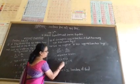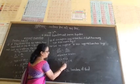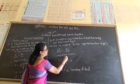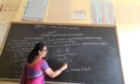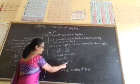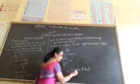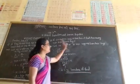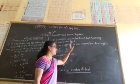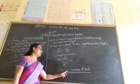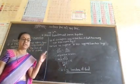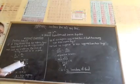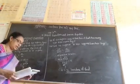Solving this, x is equal to 32 bunches. So for 1,180 rupees, we can get 32 bunches. This is a direct proportion.